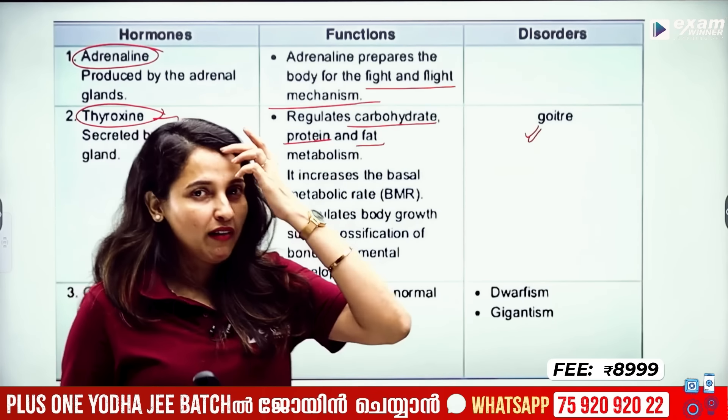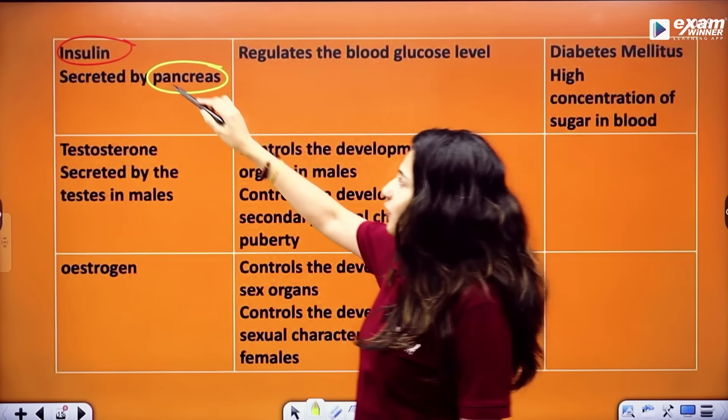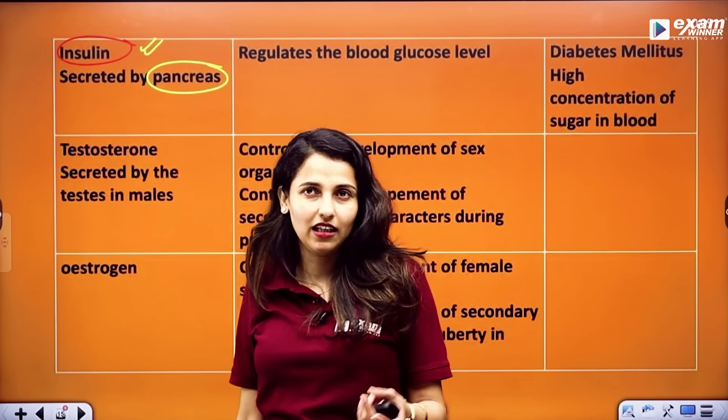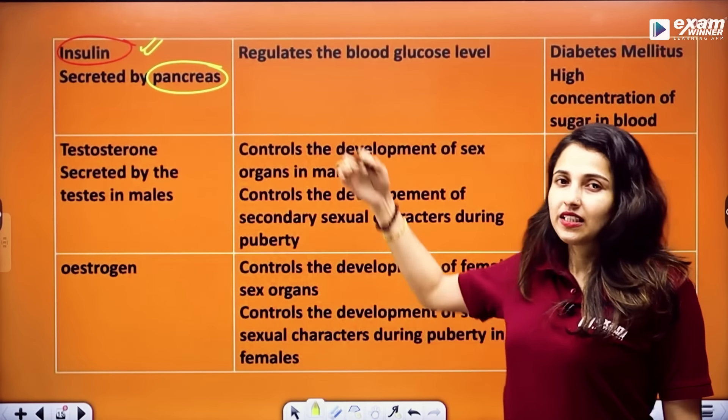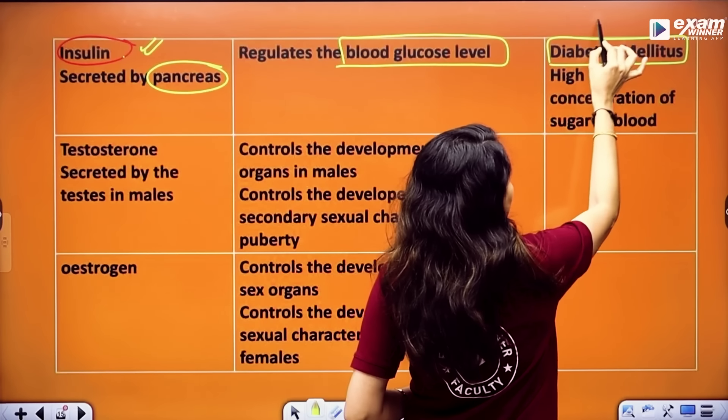Then comes the hormone insulin, secreted by the pancreas. The pancreas also secretes enzymes like pancreatic lipase and trypsin, so it is both an exocrine and endocrine gland. Insulin regulates blood glucose level. Deficiency of insulin causes diabetes mellitus, also called sugar disease.